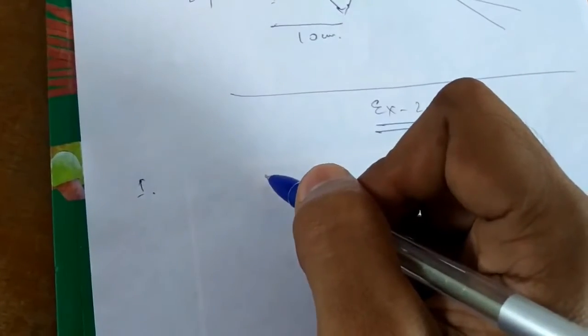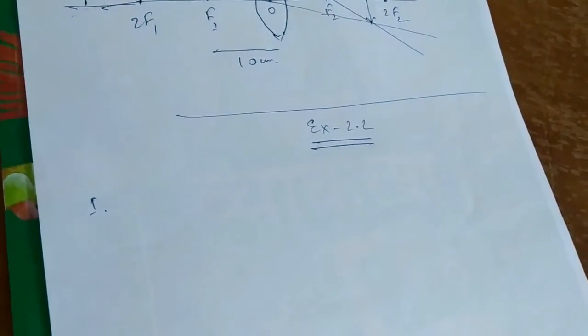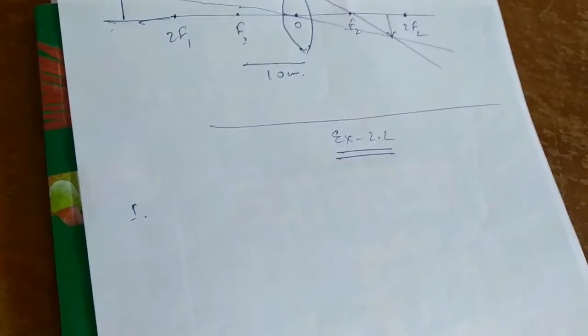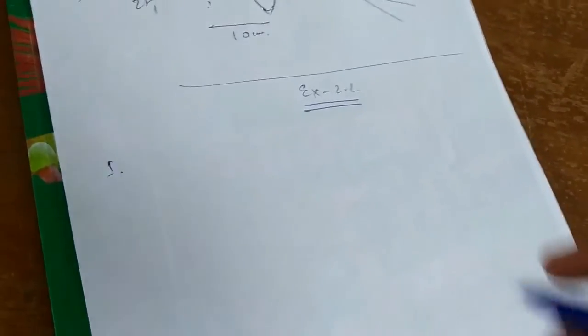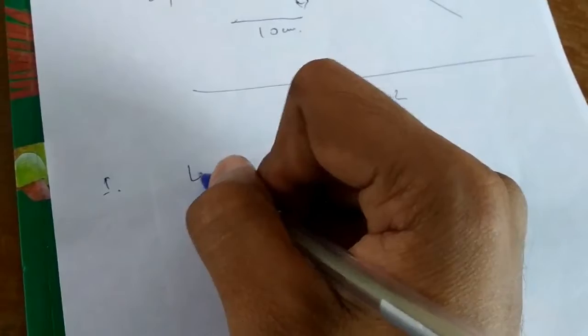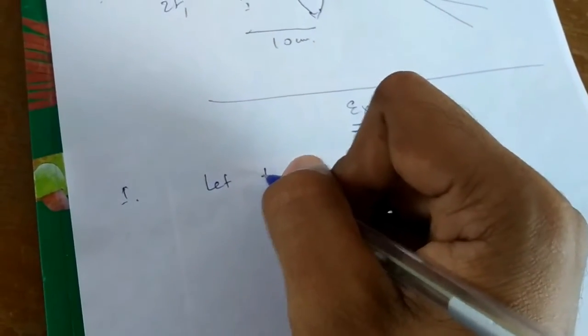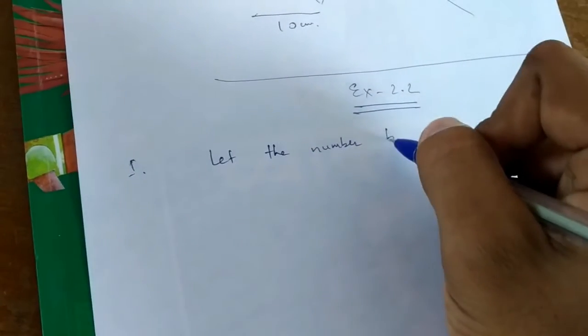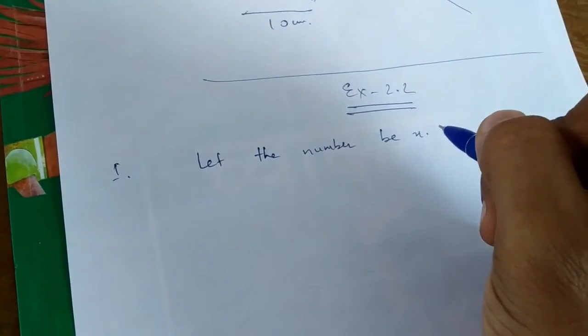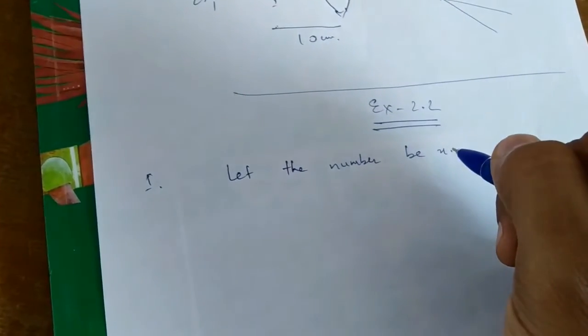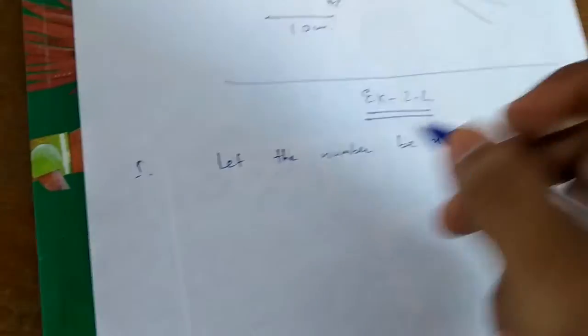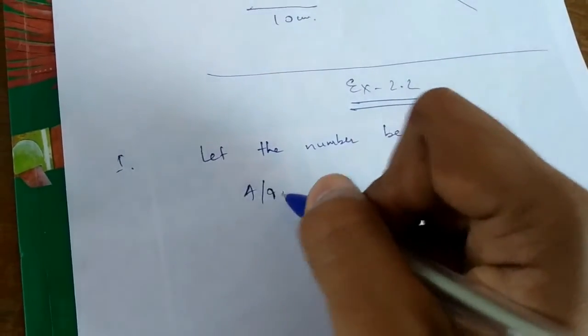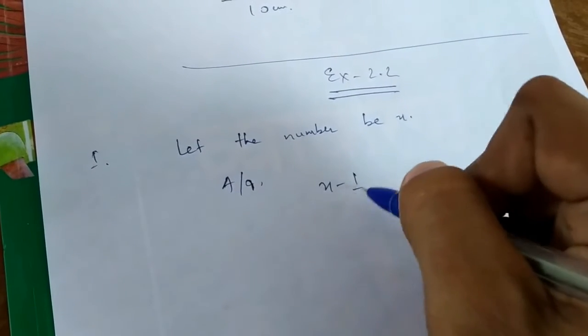If you subtract 1 by 2 from a number and multiply the result by 1 by 2, you get 1 by 8. What is the number? Let the number be x.